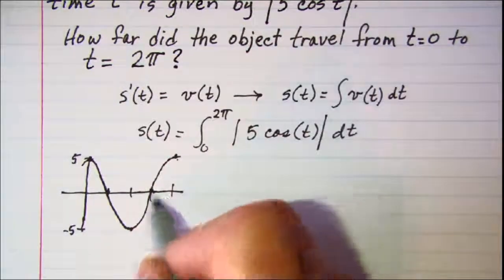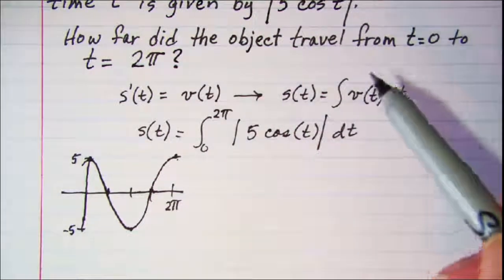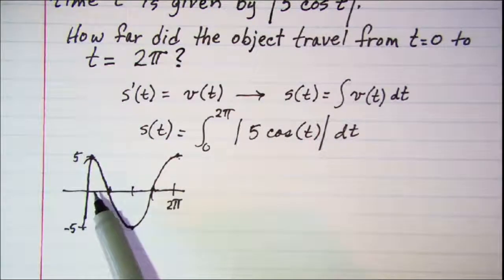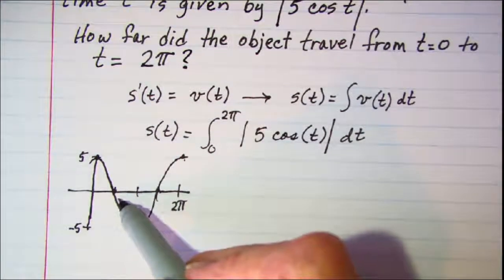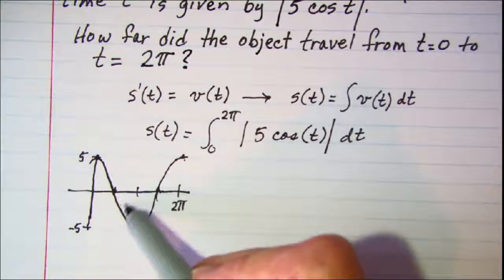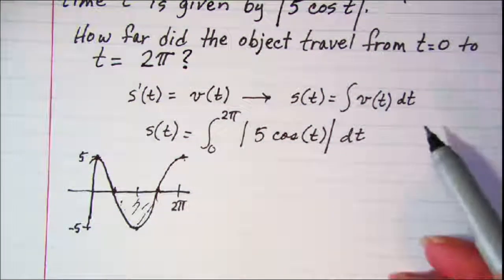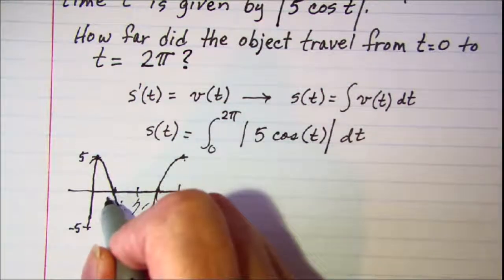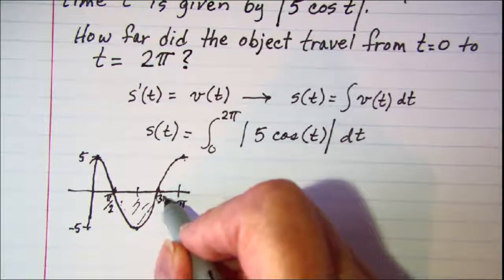It completes one period in 2 pi which is the interval that we're looking at. For our problem we need to subtract the area that's below the x-axis. We know that it crosses the x-axis at pi over 2 and then again at 3 pi over 2.